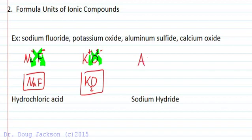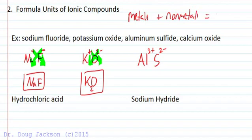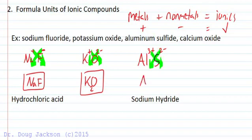Aluminum sulfide: aluminum is in column three, so aluminum three plus; sulfur is in column six, so it gets a two minus. Notice these are all metals plus nonmetals — that equals ionic compound. We crisscross: two goes to aluminum and three goes to sulfide, giving us Al₂S₃ as our formula unit.